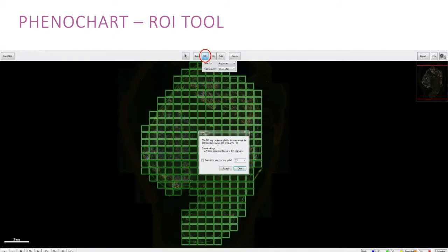On this slide we selected the whole tissue section for multi-spectral imaging and it consisted of 279 MSIs which would have an acquisition time of approximately 140 minutes.